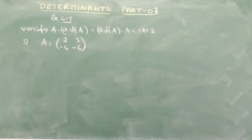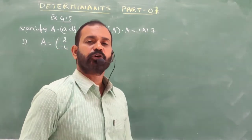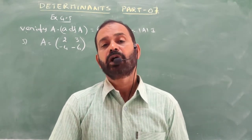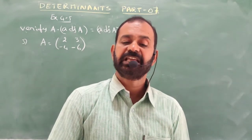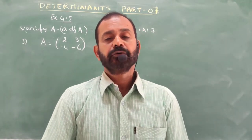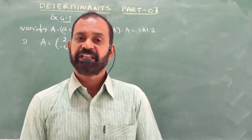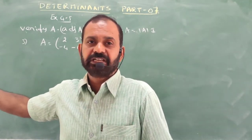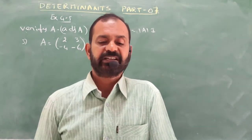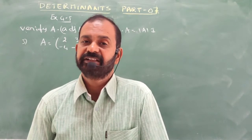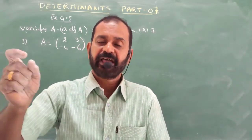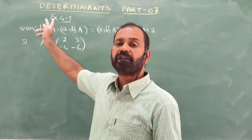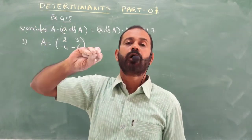Now let me proceed to the next model: verify that A times adjoint A equals adjoint A times A equals |A| times I. Problems 3 and 4 are given. Let me take the 2×2 matrix. For the 2×2 matrix, I need to find adjoint A, then verify the property.